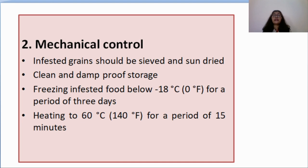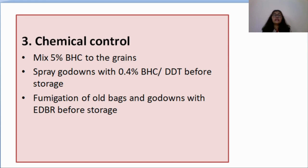The third method is chemical control, the most popular method. You can mix 5% BHC with the grains. Spray the godowns with 0.4% BHC or DDT before storage. Fumigation of old bags and godowns which are empty with EDB before storing newly harvested grains is quite effective in controlling rice weevil.